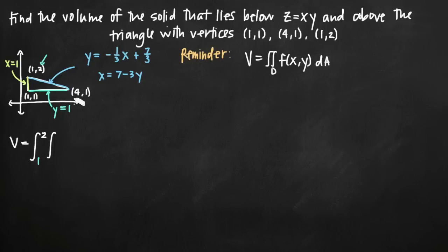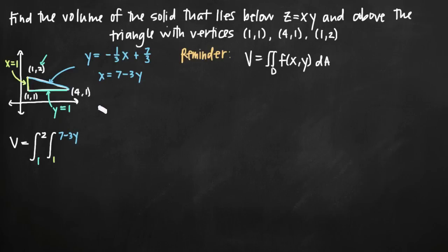For x, the leftmost value is 1, given by the green line x equals 1. The rightmost value is dictated by the blue hypotenuse line. Depending on which horizontal slice of the triangle we take, the upper limit for x changes. So we plug in 7 minus 3y as our upper limit for x. Our integrand is xy from z equals xy, with dx on the inside and dy on the outside.